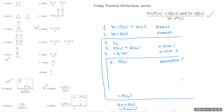Now we have P(x₀) on line 6 and P(x₀) implies Q(x₀) on line 4 — both pieces needed for →-elim. So on line 7, by →-elim on lines 4 and 6, we get Q(x₀).